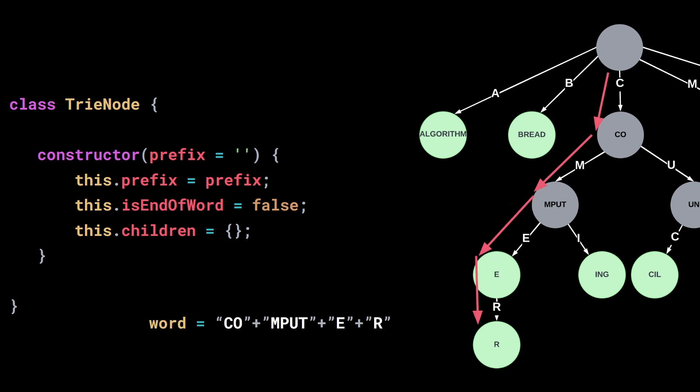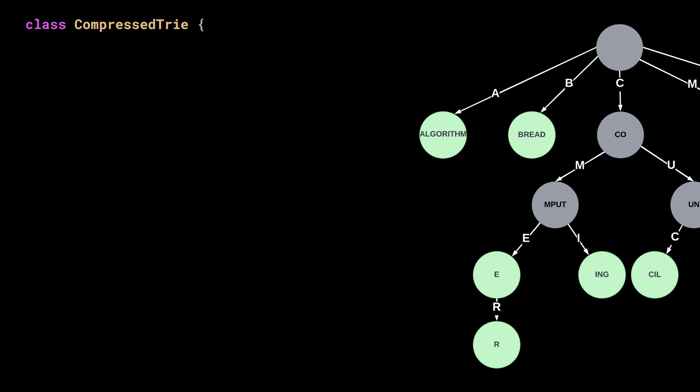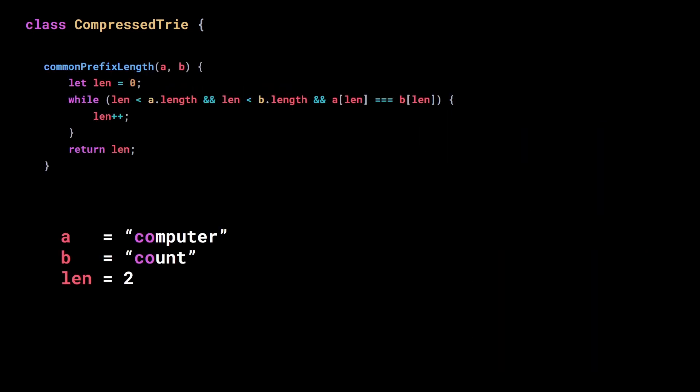With this representation, to read a word we start from the root and concatenate the letters in the prefixes of the nodes. Now let's create a class for the compressed trie. Like a regular trie, we start by creating a root node. Before inserting words, let's create a utility method that calculates the length of the longest common prefix of two strings A and B.